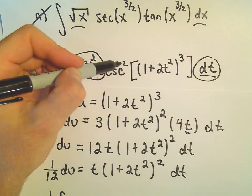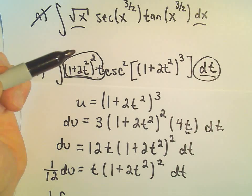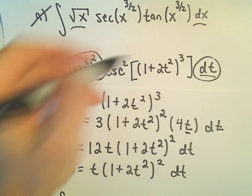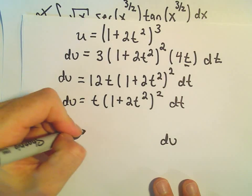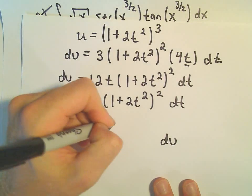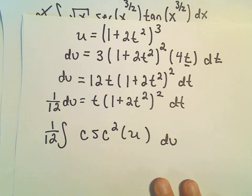And then we would have cosecant squared left over, but cosecant squared of the stuff on the inside, that's what we decided to call u in the first place. So now we have cosecant squared of u.